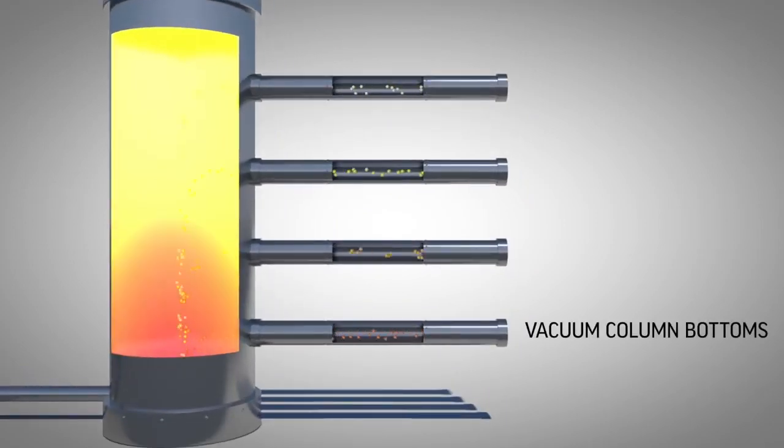The material left at the bottom of the vacuum tower can be used to make asphalt or heavy fuel oil, or it can be sent to yet a third unit called a coker.